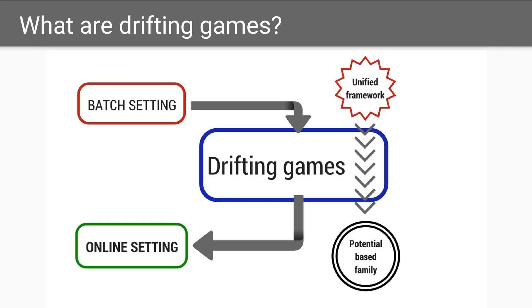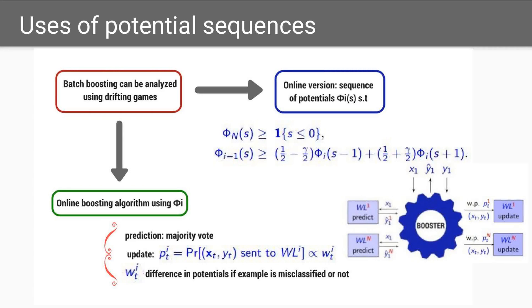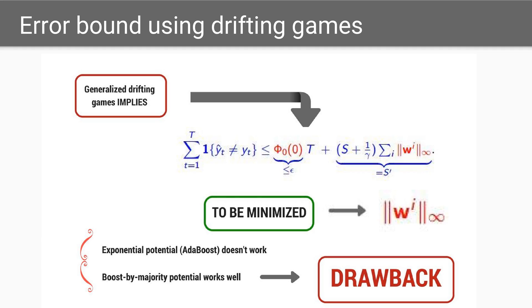Through the use of drifting games, we can jump from the batch setting to online setting. The authors use this unified framework focused on the use of a potential-based family. Let's connect the definition of the potential family with our well-known online boosting scheme. In the formula of the mistake bound in a strong online learner, we see that the term to be minimized is the norm of maximum length of the vector of weights, for each time instant.